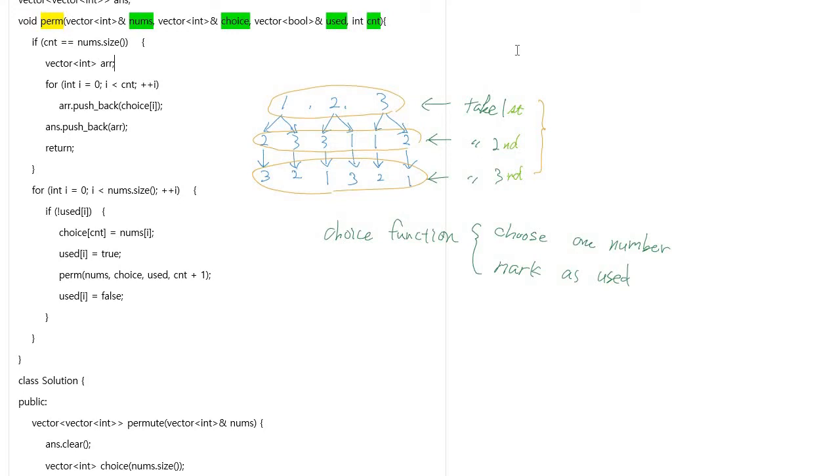is count, which is the count of chosen numbers. When the count value equals the numbers size, which means all numbers are chosen, at this point we have to push back the choice numbers into the answer array. The answer array is the